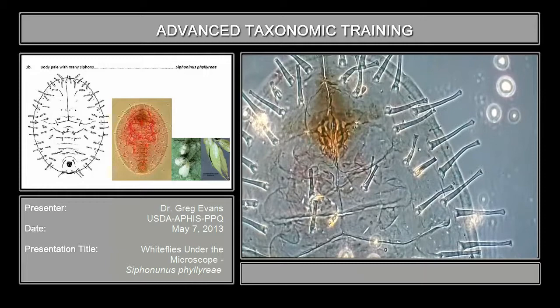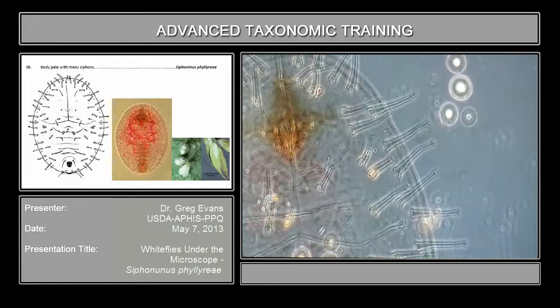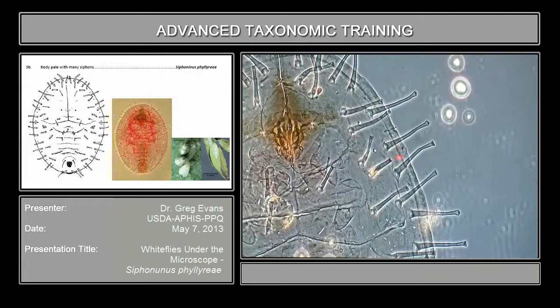Here are the mouthparts, and at the lateral margin you can see it's not differentiated. A lot of times at the lateral margin they'll either have a pore cleft or the teeth will be different at the lateral margin, but this is what we call undifferentiated because it's the same at the lateral margin as it is at the tracheal opening.